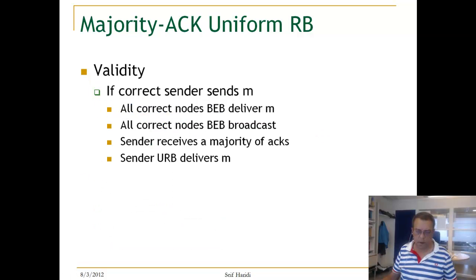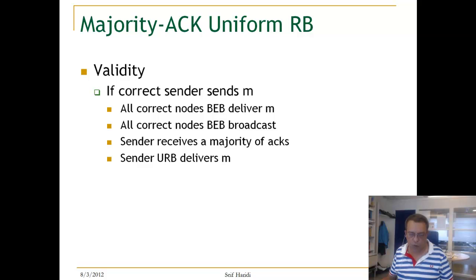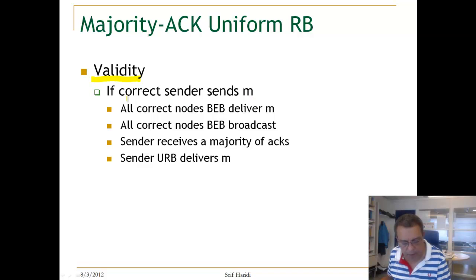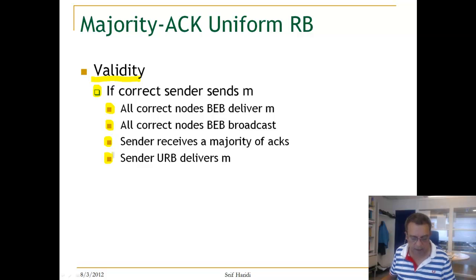We know if a correct node BEB delivers, every node will BEB deliver. Now let us look at validity. Validity says a correct process that broadcasts a message will deliver the message. If a correct sender sends a message M, because it is correct, all correct nodes BEB deliver. And if all correct nodes BEB deliver, then all correct nodes BEB broadcast, which means the sender will get a majority of ACKs and will then uniformly deliver the message.